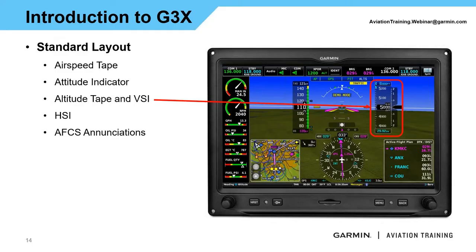A nice thing with this panel: we have the altitude selector and baro box in cyan. Following our standard Garmin logic, if I see it in a box and it's cyan, that means I can make a change. With the touchscreen, I can press those individual boxes, bring up a keypad, and input directly. I also have options with the knobs in the corner — the outer knob on the lower left is set to altitude selector, the right knob is set to baro. So there's redundancy: if turbulence makes touch difficult, we can grab the knobs and still accomplish what we need.